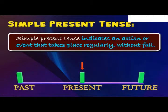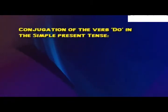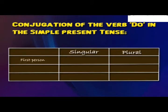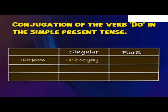If you carefully look at the timeline, the arrow signifies the time when the action or event happens, as represented by simple present tense. Let us understand the conjugation of the verb 'do' in simple present tense. For first person singular, the subject is 'I' and the sentence used is: I do it every day.